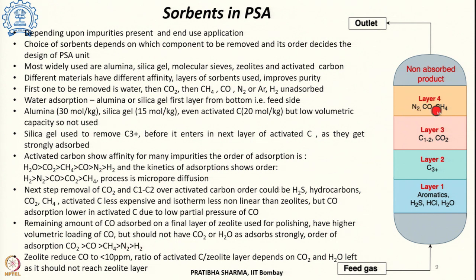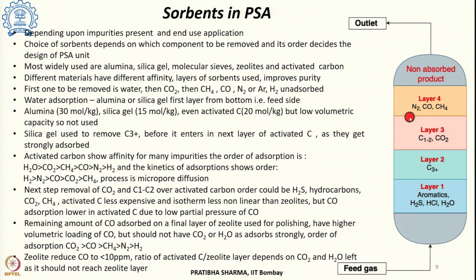The important thing is that zeolite strongly adsorbs CO2 and moisture, so these must not reach layer 4. If carbon dioxide or moisture reaches this layer, it will form a strong bond requiring very high temperatures or vacuum pressures to remove. To avoid this, the ratio of activated carbon to zeolite layer thickness is selected such that CO2 and H2O do not reach the zeolite layer. In the zeolite layer, the adsorption order is: CO2 > CO > methane > nitrogen > hydrogen.